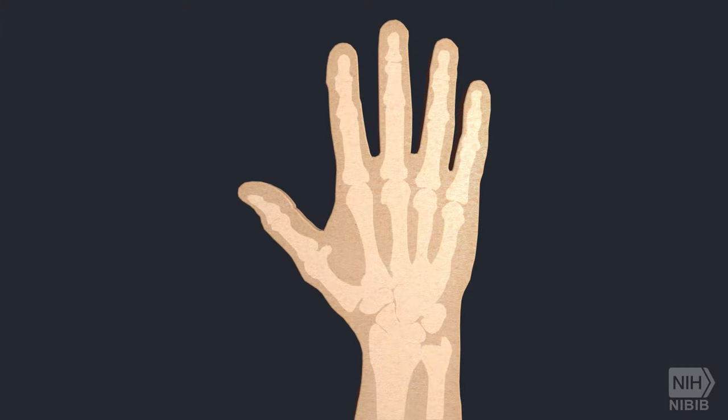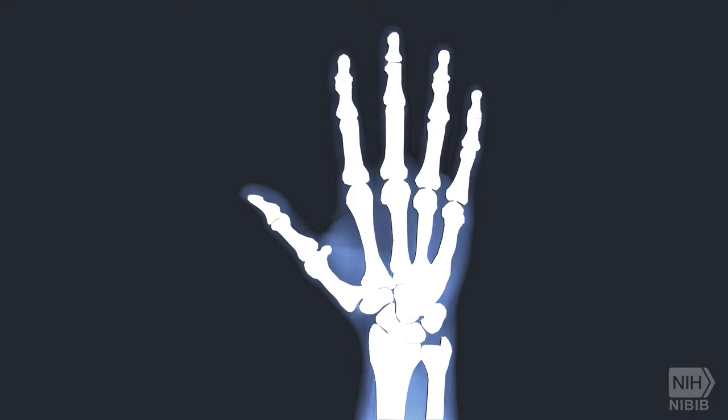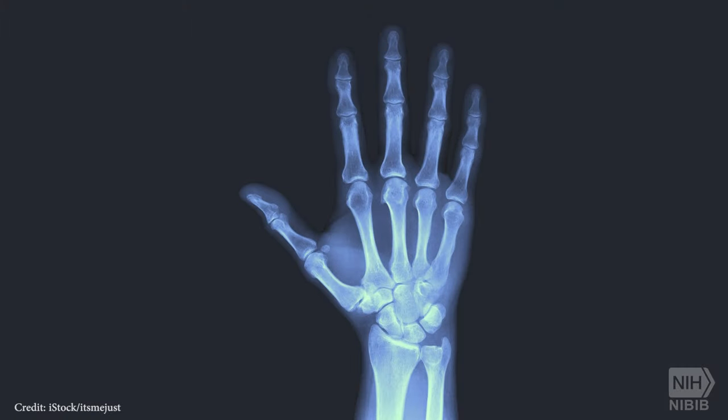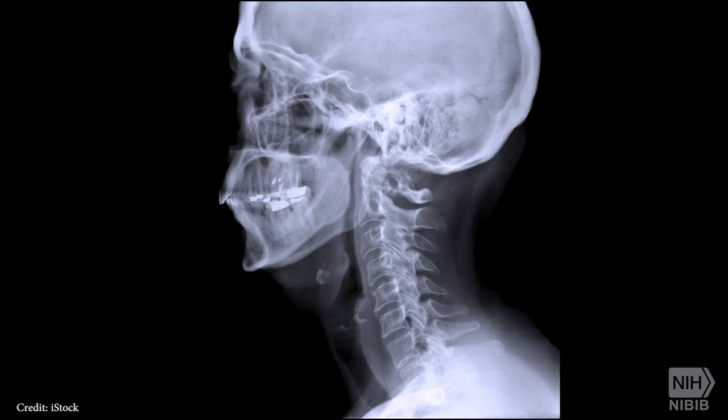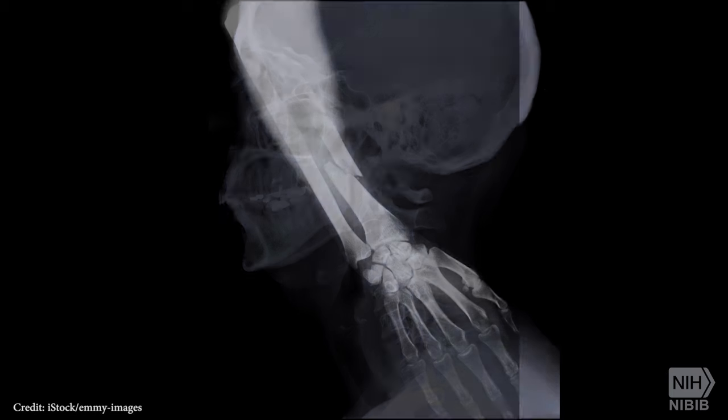x-rays directed at the body produce shadows on the opposite side that can be registered on film or on a digital sensor, so that bones are clearly visible while soft tissues, such as muscle, are shadowy.